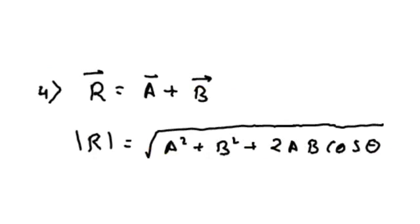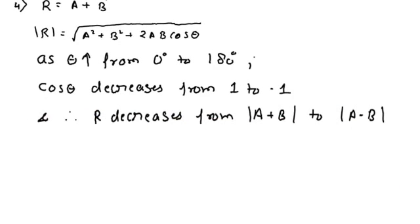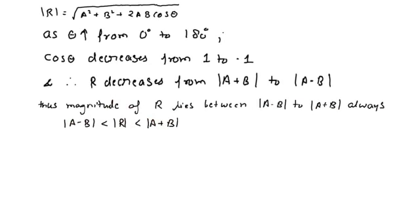Finally, if R is a vector which is the sum of vector a plus vector b, the magnitude of R will be equal to the square root of (a squared plus b squared plus 2ab cos theta). In this formula, if theta increases from 0 degrees to 180 degrees — where theta is the angle between a and b — the value of cos theta decreases from 1 to minus 1. When cos theta decreases, the value of R also decreases. When cos theta equals 1, R equals a plus b; when cos theta equals minus 1, R equals a minus b. Therefore, the magnitude of R lies between |a minus b| and |a plus b|.